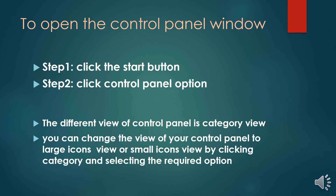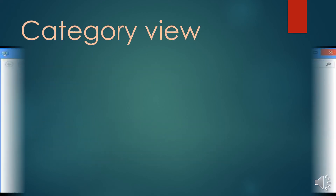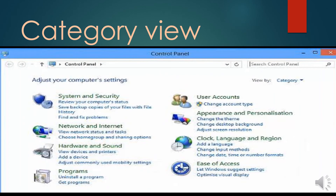The control panel window appears on the screen. You can change the view of your control panel to large icons view or small icons view by clicking Category and selecting the required option. There are two views: large icon view and small icon view. The default view is category view.